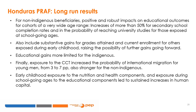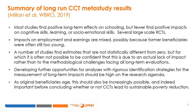Finally, exposure to the conditional cash transfer program increased the probability of international migration for young men by 3 to 7 percentage points, and this effect was also stronger for non-indigenous individuals. This long-run evaluation showed that early childhood exposure to nutrition and health components, and exposure during school-going ages to the educational component, led to sustained increases in human capital. This study was included in a wider meta-study of long-run conditional cash transfer programs by Molina Milan and co-authors, published in the World Bank Research Observer in 2019.